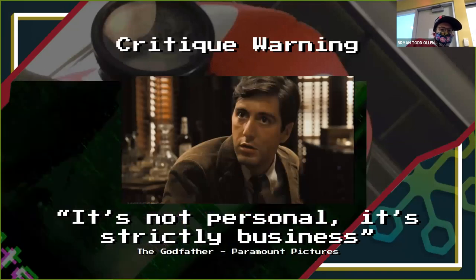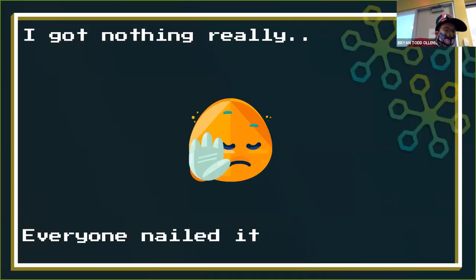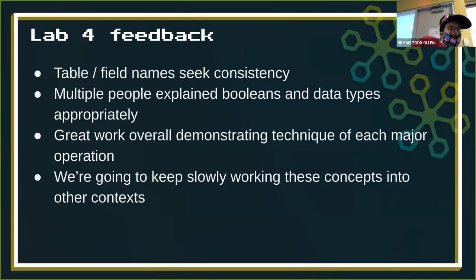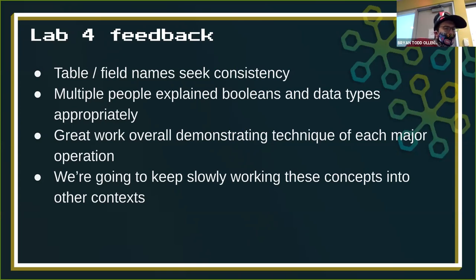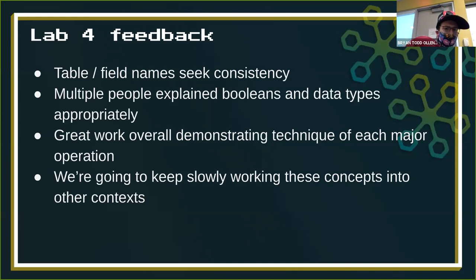We'll start out with critique this week. As I mentioned, it's really grueling — I have almost no feedback. About two weeks ago I had a ton of feedback, a lot of nitpicky stuff. It seemed like basically everyone went and applied that to their models, which is awesome, and then applied from the models into their actual database design. General feedback this week: table and field names — just seek consistency. A couple people still using spaces in names, which would be a pain to actually use. Multiple people explained booleans and data types appropriately, which is great.